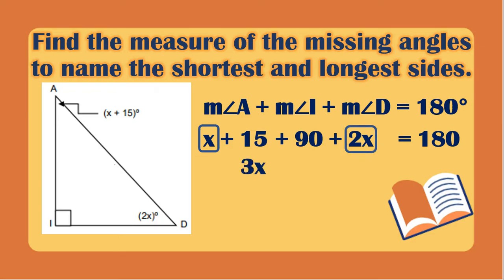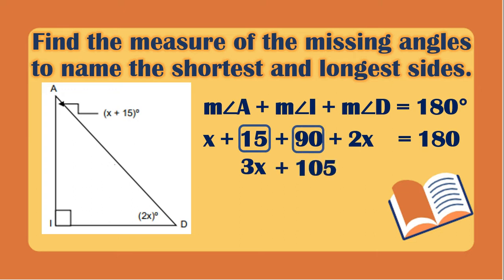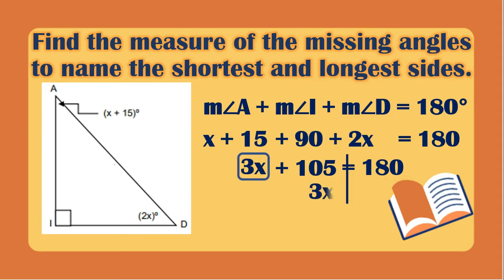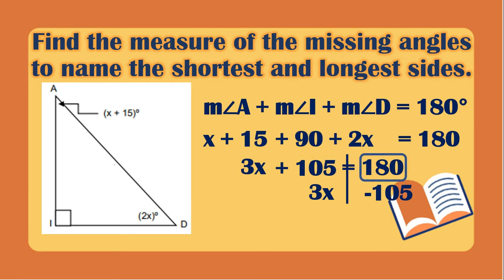Combining like terms: x plus 2x gives 3x, and 15 plus 90 gives 105, so 3x plus 105 equals 180. Collecting the variable terms on the left and constants on the right: 3x equals 180 minus 105, which is 75.